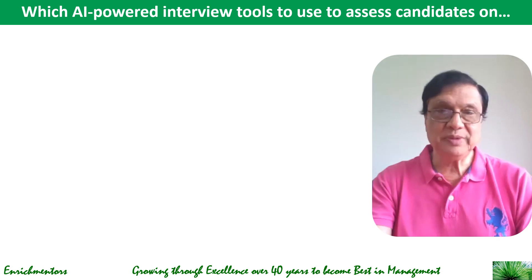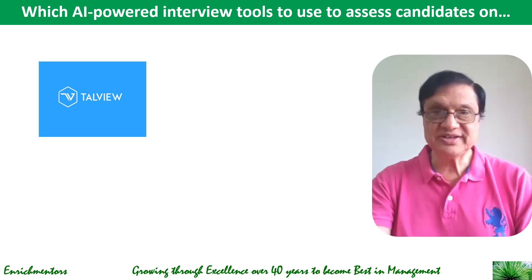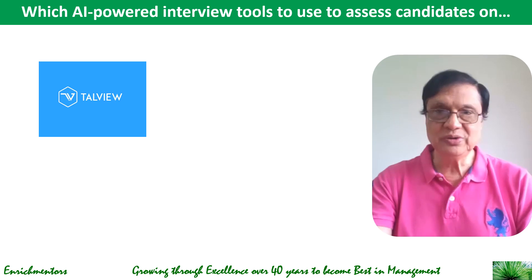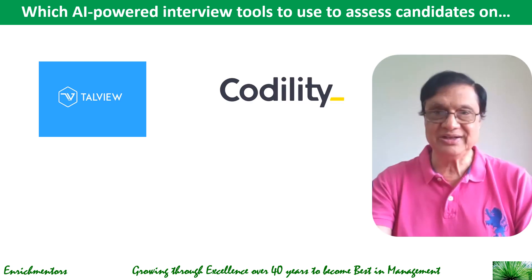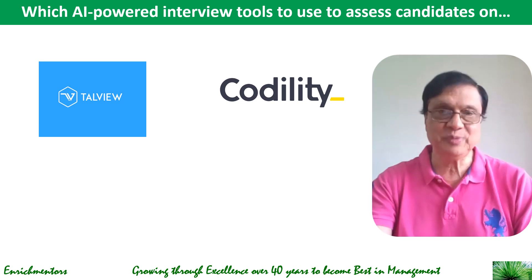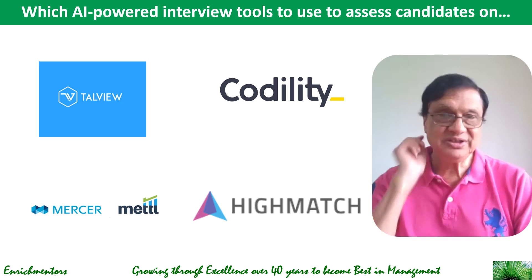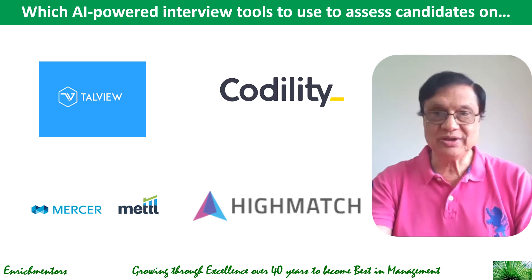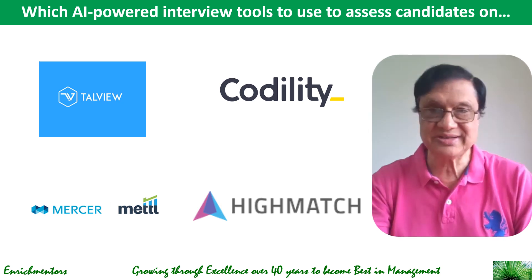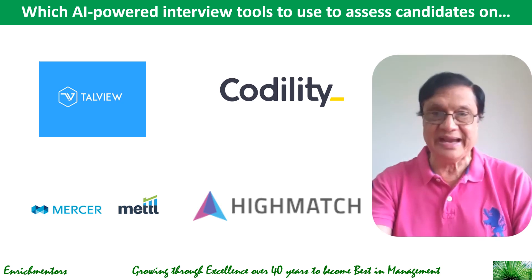Talview is another AI powered video interviewing platform that assesses candidates' communication skills, language usage, and emotional intelligence, and includes features like automated language proficiency assessment. Codality primarily focuses on technical assessments, providing an AI powered platform for evaluating communication skills and problem-solving ability in a coding context. Mercer's tool called METL provides a range of assessments including psychometric and cognitive tests, which can be customized to assess communication skills and emotional intelligence for a variety of roles. Finally, Burke, now known as HiMatch, combines cognitive and personality assessments to evaluate candidates' communication styles and emotional intelligence, and can be used for pre-employment screening and talent development.